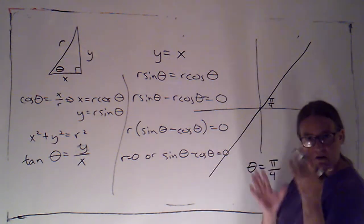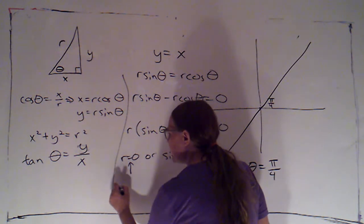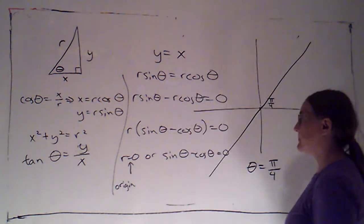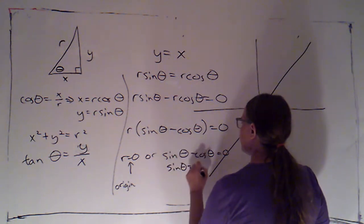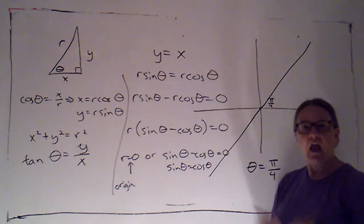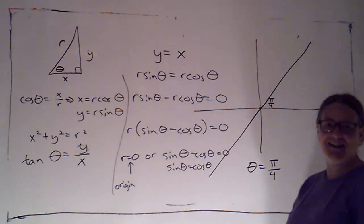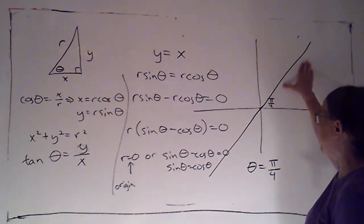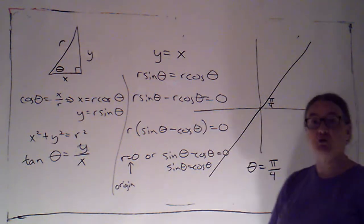Now this is kind of interesting, because if r is zero, the graph of that is just a single point. That would correspond to the origin. Here, this would mean that sine of theta equals cosine theta. Algebraically, there are infinitely many solutions. Any angle whose sine and cosine are the same is going to make this true. So anything that's coterminal with either pi over four or five pi over four would be an algebraic solution.